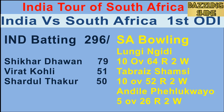India still need 43 runs in two overs. On the last ball of the innings, Nagidi to Thakur — he plays a full toss over cover and runs for a single, and that brings up his 50. Thakur is not out on 50. India finish on 265 for 8.